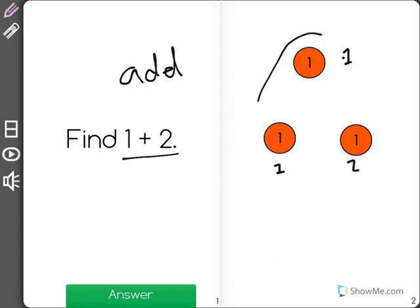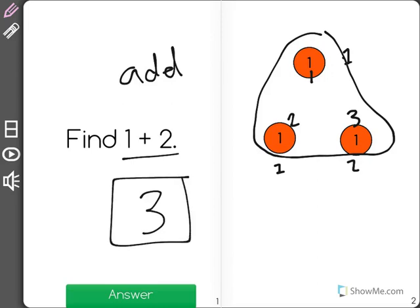Now when I add and put them in one big group, I am going to see how many counters I have in the group. 1, 2, 3. 1 plus 2 is equal to 3.